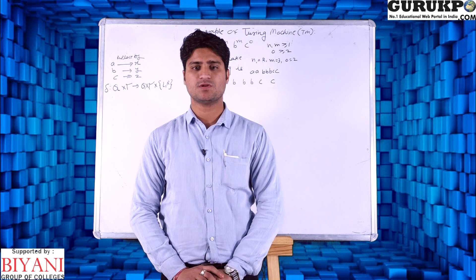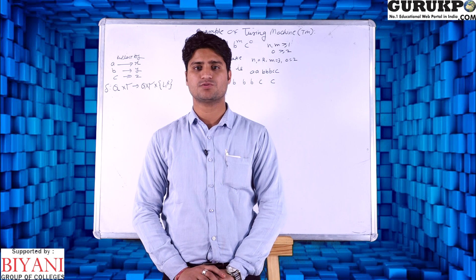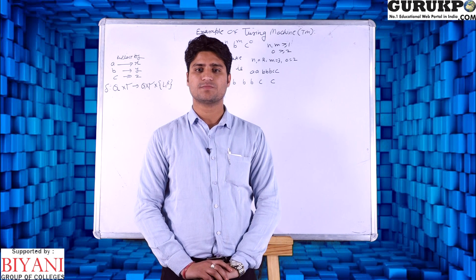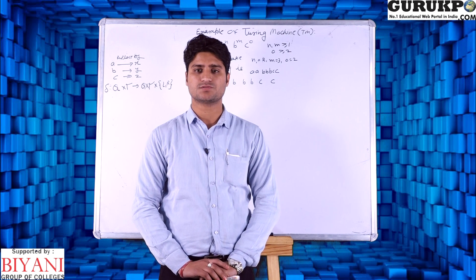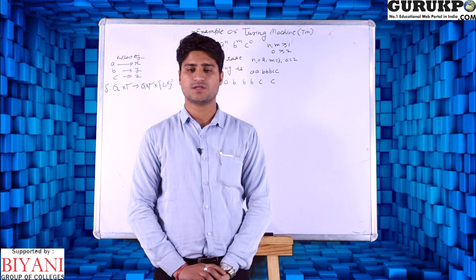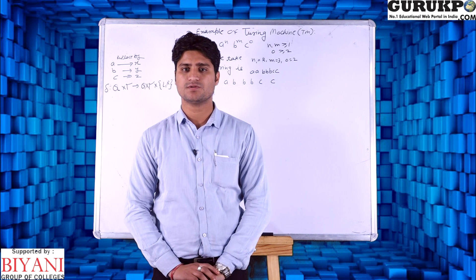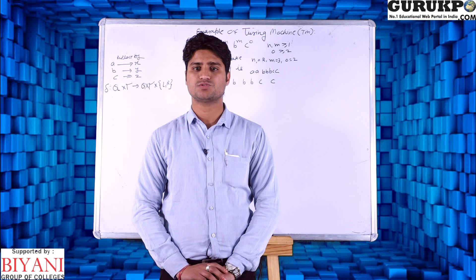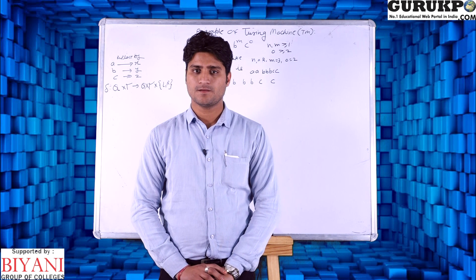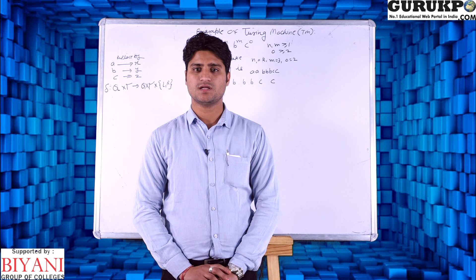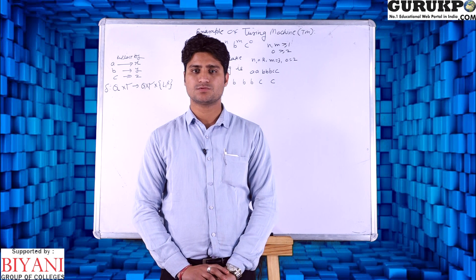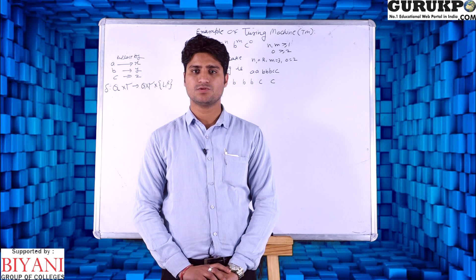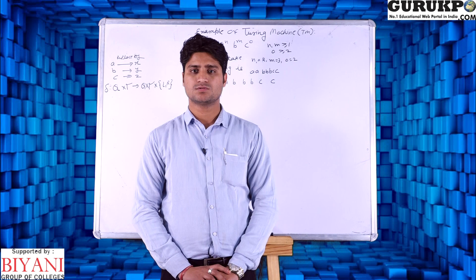In the example of Turing machines, first of all I will discuss the basic concept. If we have three or more comparisons, then we can use the Turing machine concept. Turing machines came into use after push down automata failed. Push down automata only allow one comparison; if you have two comparisons it will fail to construct the automata. So we need Turing machines, which allow two or more comparisons.